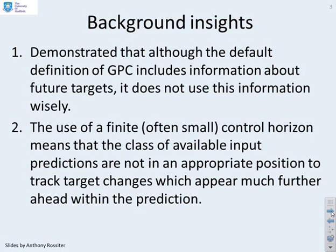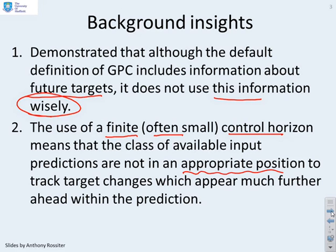We've demonstrated that the default definition of GPC includes information about all future targets, but it does not use this information wisely. The use of a finite, and usually small, control horizon means that the class of available input predictions are not in an appropriate position to track target changes which appear much further ahead within the prediction. So there's a mismatch between the degrees of freedom you've got available and the target changes you may want to track.